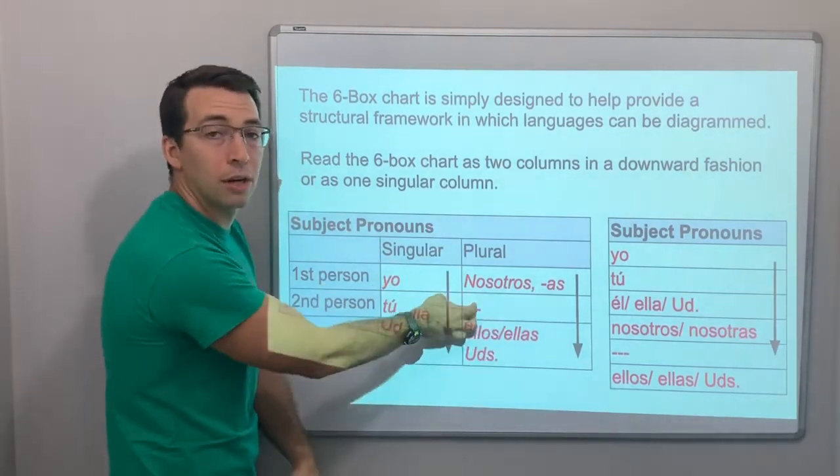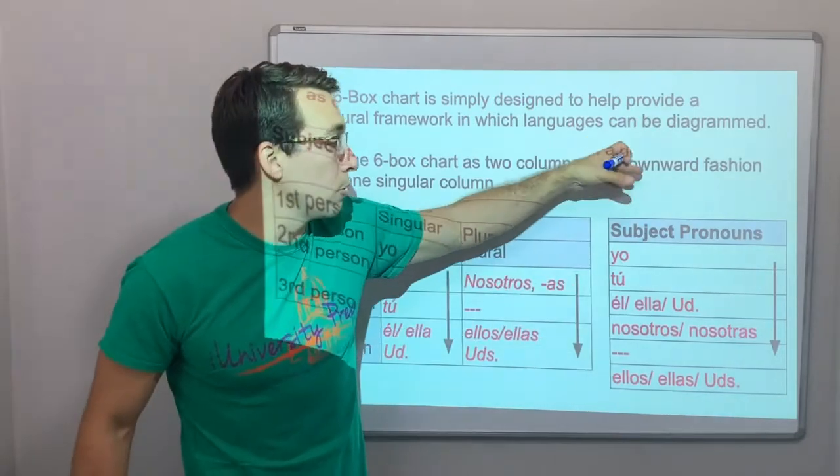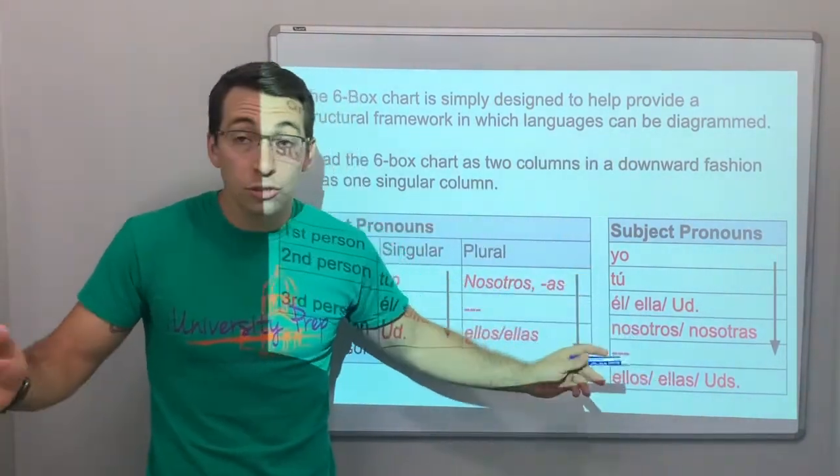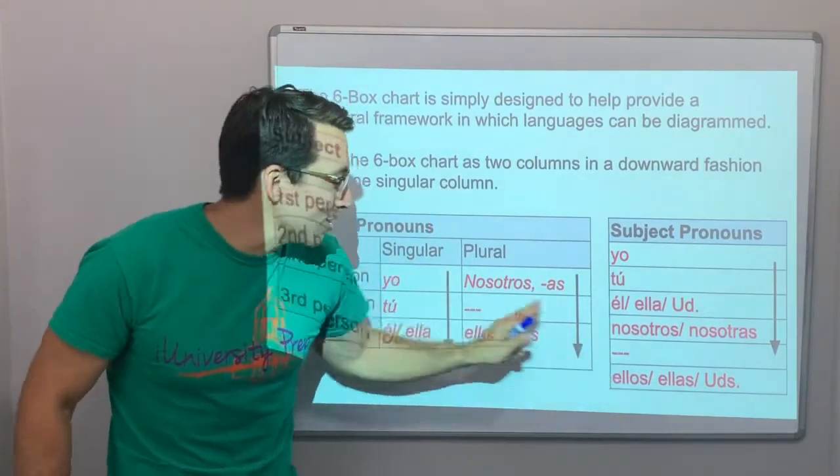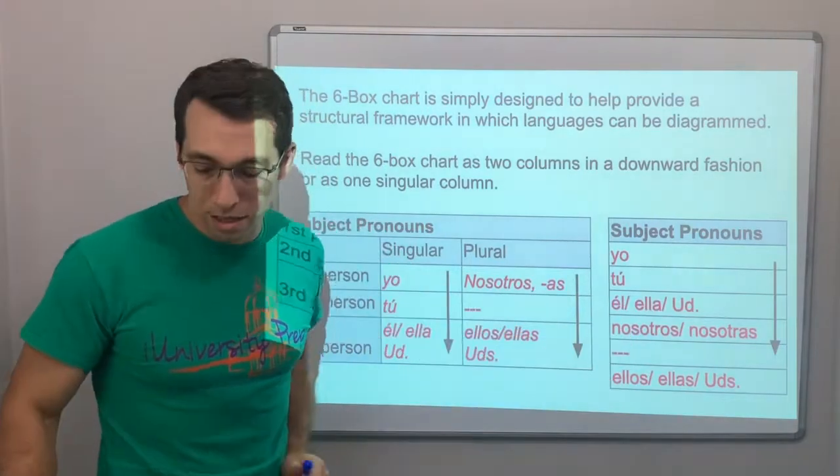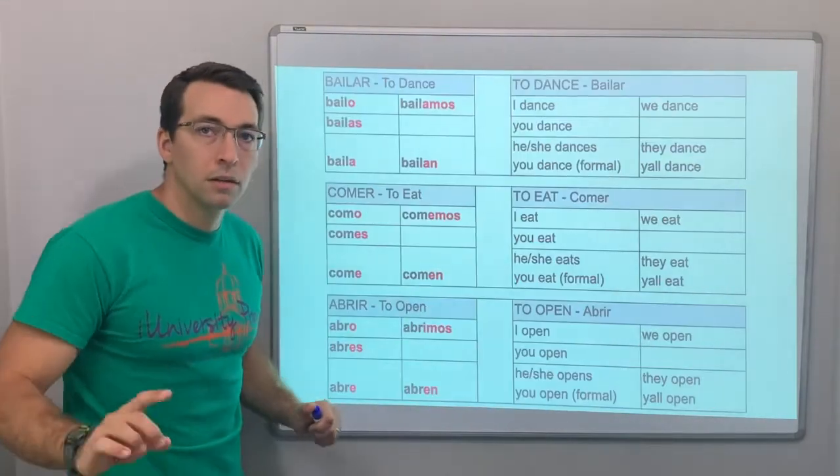Okay? Sometimes, you'll be presented with a chart like this. Sometimes, you'll be just a singular column. Yo, tú, él, ella, usted, nosotros, vosotras. Vosotros, remember, we're not going to deal with vosotros in this class. Ellos, ellas, ustedes. All right.